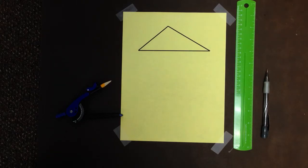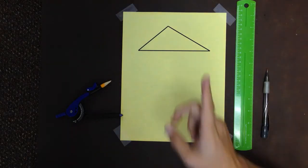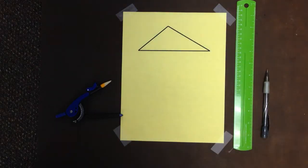Constructing a congruent triangle using side angle side congruence. That's what we're going to do.